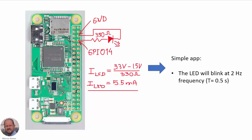To illustrate the whole process, we are going to develop a very simple app — we are going to drive an LED from one of the outputs of the board. Here we can see the schematic: we are using the pin corresponding to GPIO number 14, then a 330 ohm resistor and LED in series, and then connected the cathode of the LED to ground, which is on the adjacent pin.